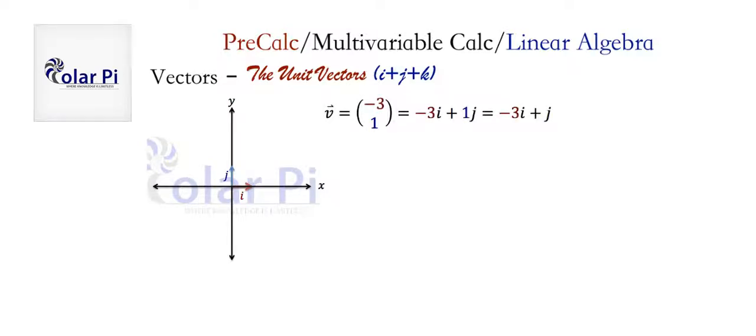So with that said, it means that the vector v here, which we're used to writing in column notation here, can be written as negative 3 times i plus 1 times j, and of course, it doesn't make sense to have this one in front of the j, so we could simply drop the one and write negative 3i plus j.